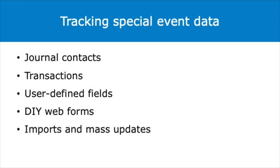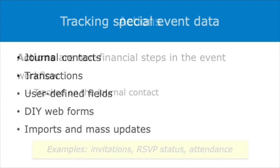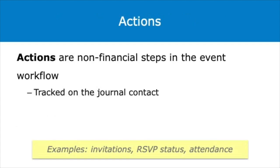There are two event data elements in eTapestry. You may use both elements depending on the type of event you are hosting. Actions are non-financial steps in the event workflow. This includes invitations, RSVP statuses, and attendance records. If you need reports on non-financial steps in an event workflow like a list of attendees, you will track those steps using an action record. Actions are tracked on the journal contact using a combination of system-defined fields and user-defined fields.